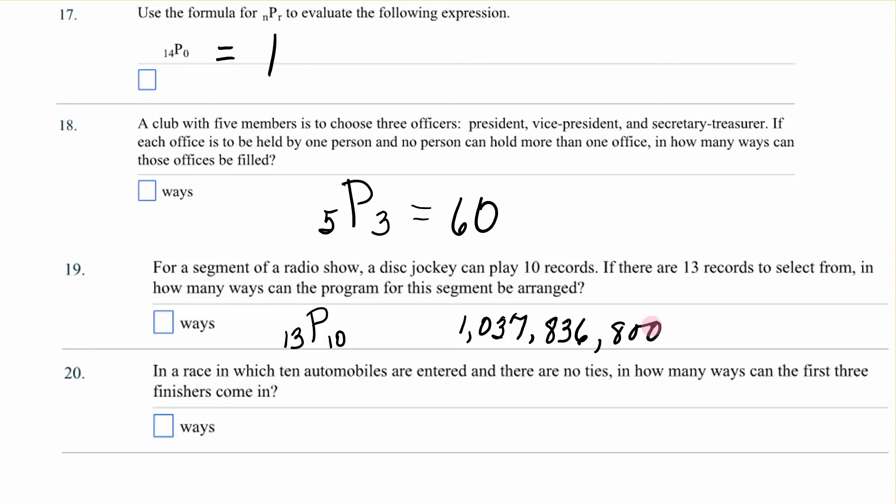Okay. In a race in which 10 automobiles are entered and there are no ties, in how many ways can the first three finishers come in? So there are 10 cars. How many different ways can the first ones finish? 1, 2, 3. If I do that with my calculator, I will get 720. There are 720 different ways that could happen.